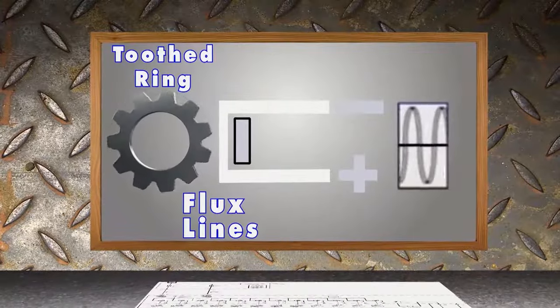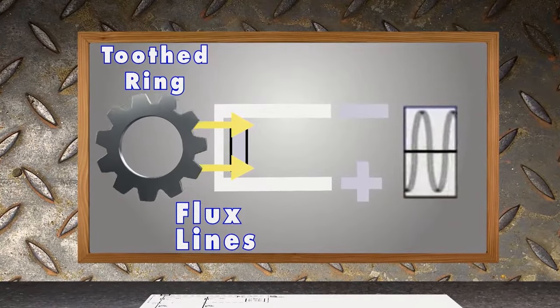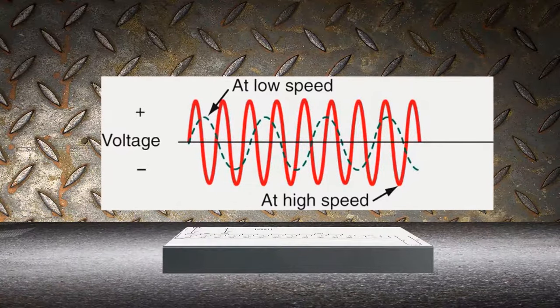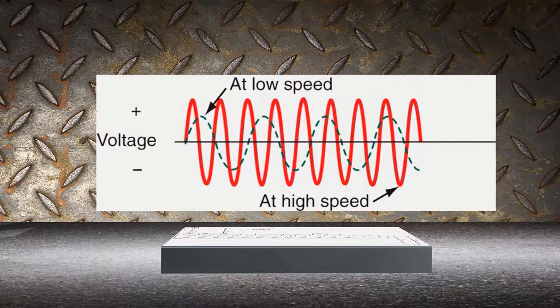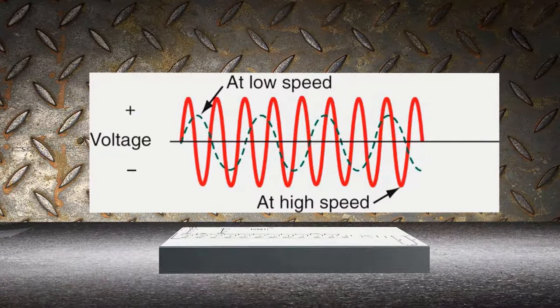Well, you've got a wheel speed sensor that does nothing more than spin around, creates these lines of flux, picks up a magnetic field, and produces an AC signal. When it produces that AC signal, the computer reads it as a speed. You can see here, the red light indicates high speeds, the green line would be a lower speed.